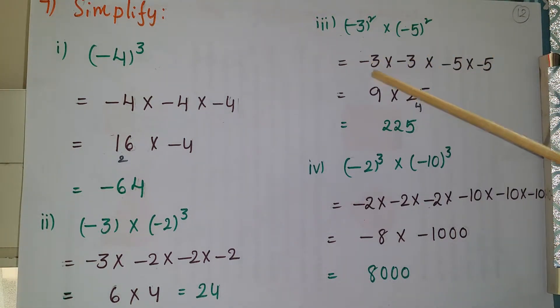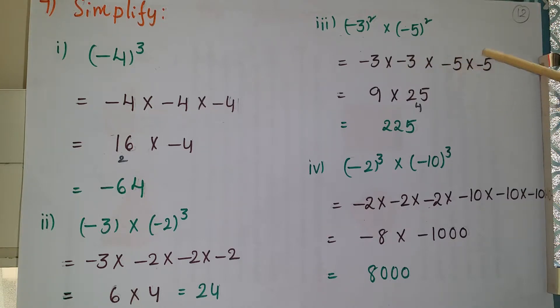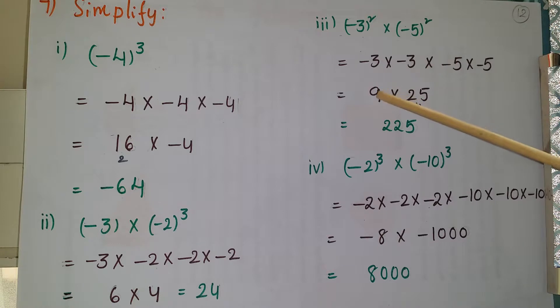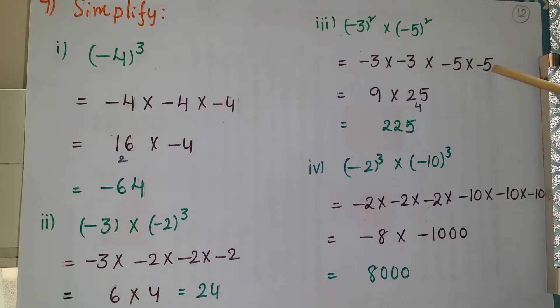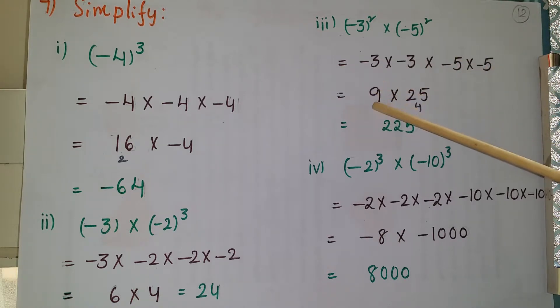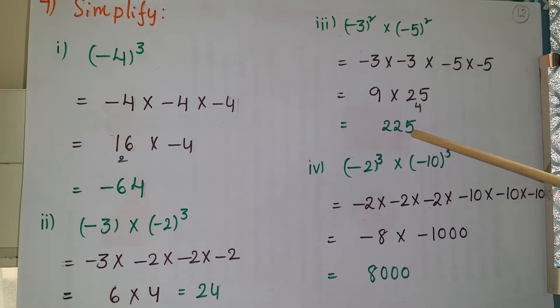Minus 3 into minus 3 is plus 9, and minus 5 into minus 5 is plus 25. Now multiply 9 into 25, which gives 225.